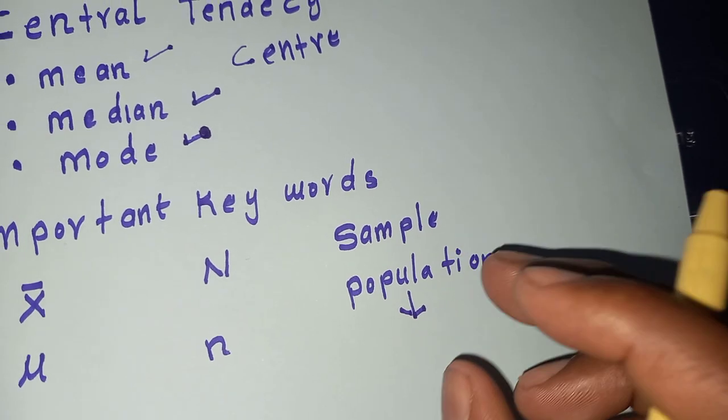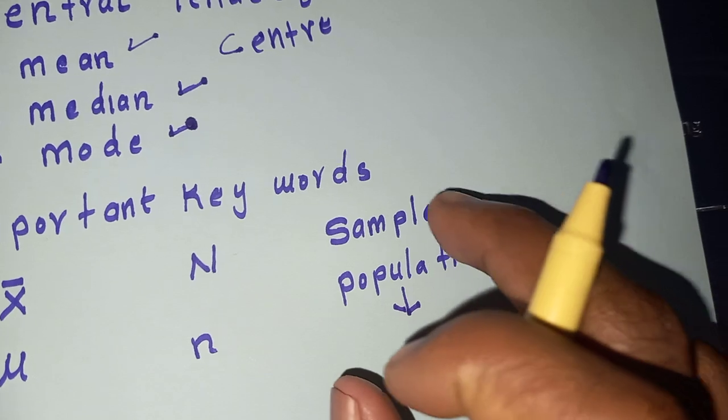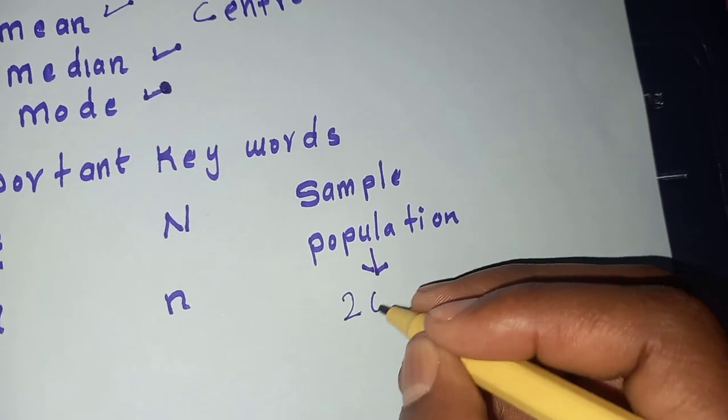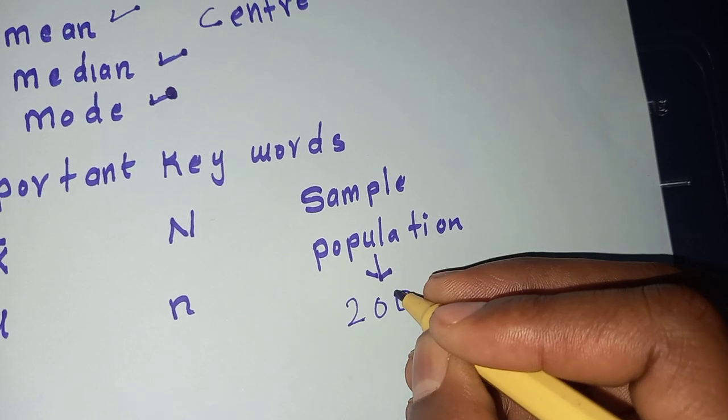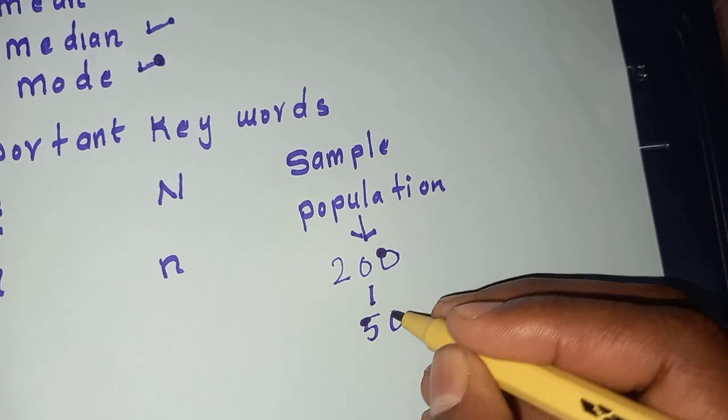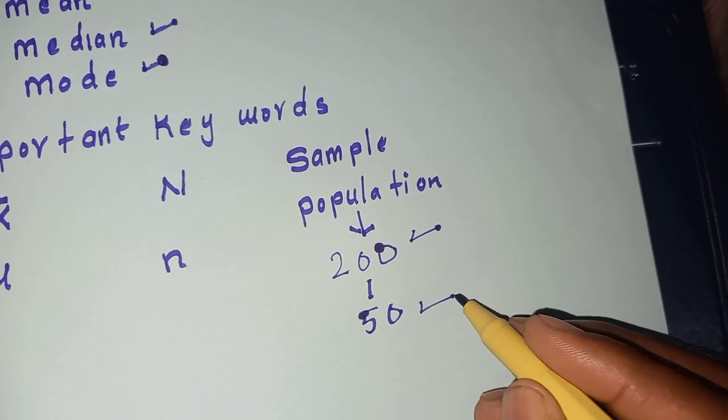Whenever I choose a small portion of this population, it is called a sample. For example, if I have 200 students and I need to select only 50 students, then the 200 will be the population and the 50 will be the sample.